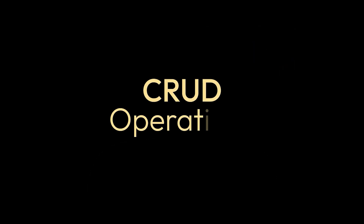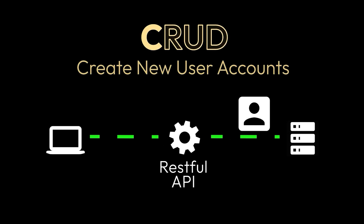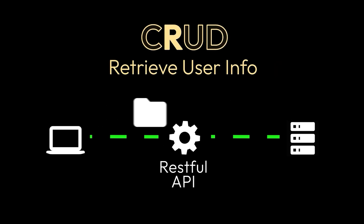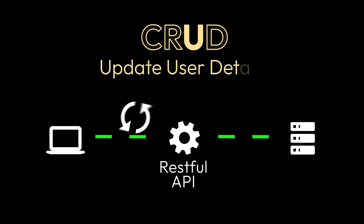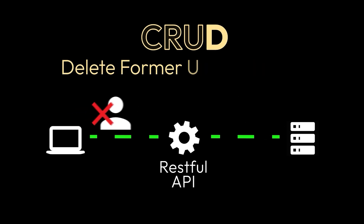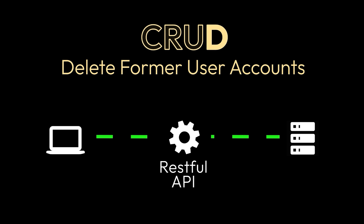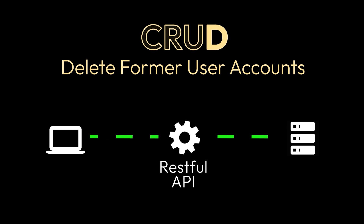SCIM provisioning uses RESTful APIs to perform key operations: creating new user accounts, retrieving user information, updating user details, and deleting users when they leave the organization. This ensures all systems remain in sync and up-to-date.